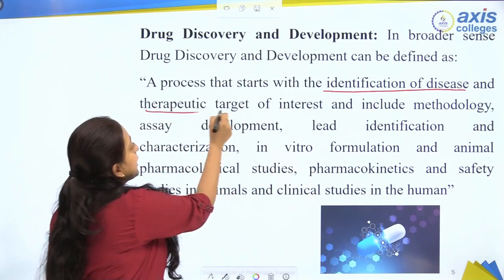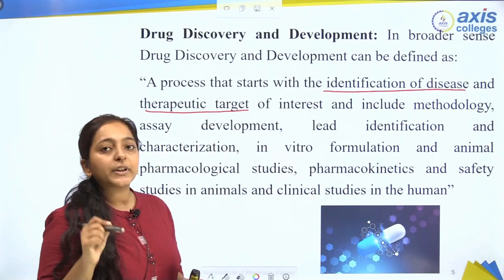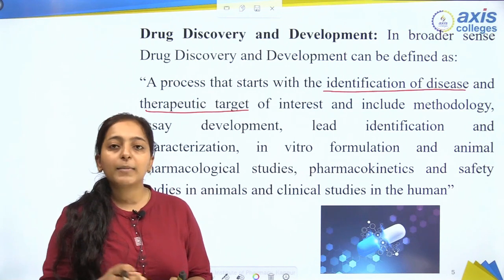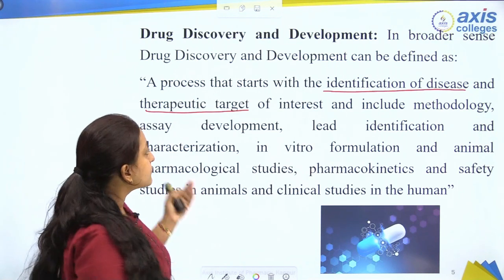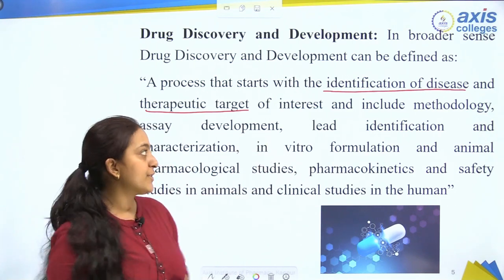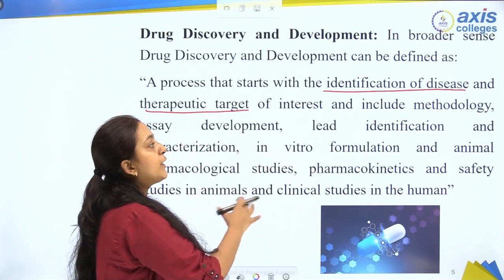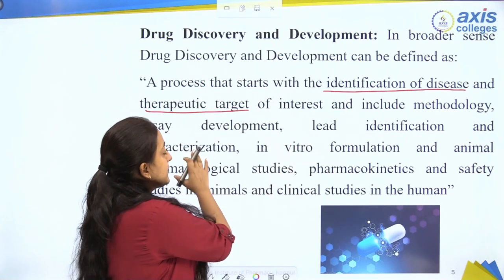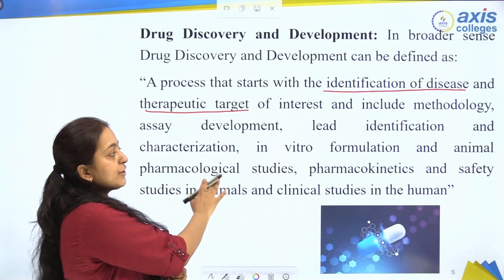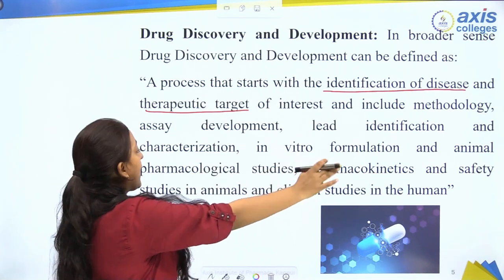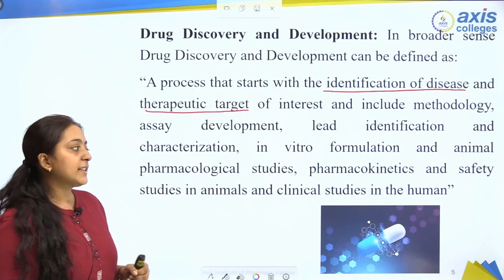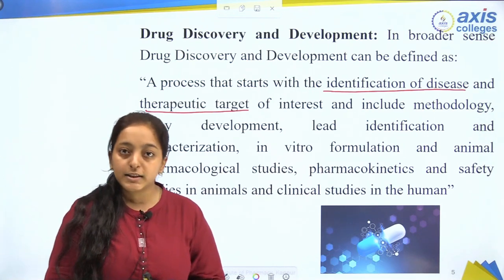Next is the therapeutic target — the target that our drug will act on in the body. The disease and therapeutic target are of interest, and the process further includes methodology, assay development, lead identification, characterization, in vitro formulation, animal pharmacological studies, pharmacokinetics, and safety studies in animals, followed by clinical studies in humans.